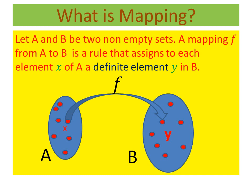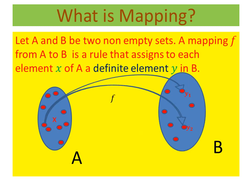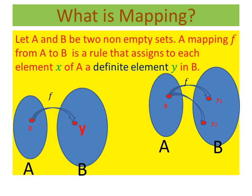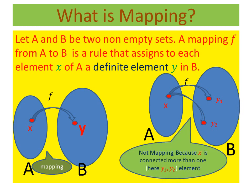Now I discuss the term 'definite element Y in B.' In a mapping, it is not possible for X to have two assignments Y1 and Y2. This violates the definition of mapping — specifically the term 'definite element Y in B.' Therefore, this is not a mapping. In the first figure we have a valid mapping; in the second figure it is not a mapping because X is connected to two elements Y1 and Y2.